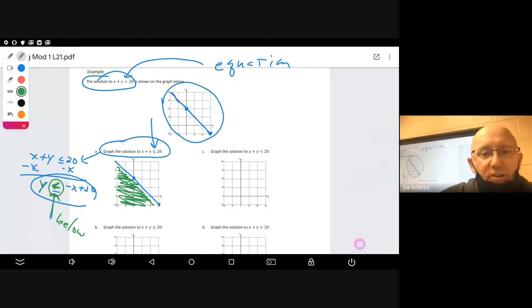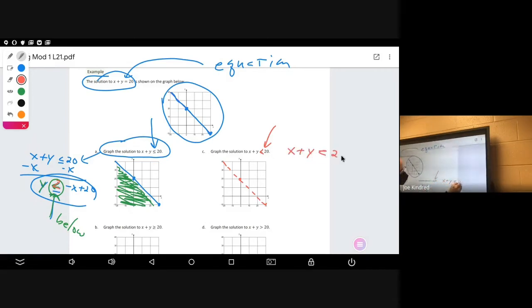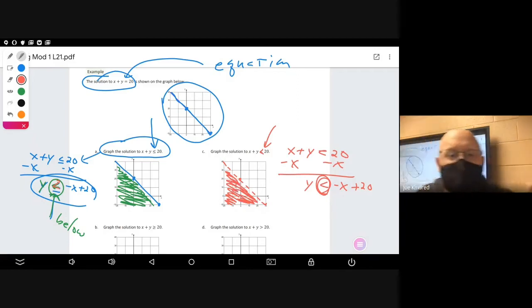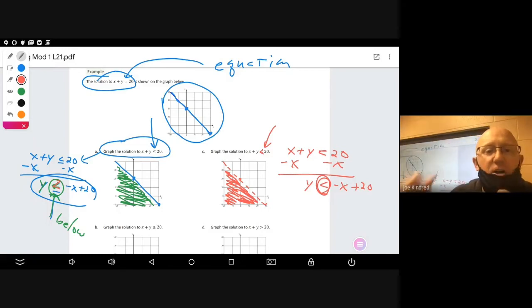Skip over to c. We'll come back to b in a second. Notice it's the same except now it's x plus y less than 20, not equal. Because it's not equal to, we're going to have a dotted line across here. Let's make sure this is right. Solve for y. Y is less than. Less than, shade here. The dotted line represents that it's not equal to.